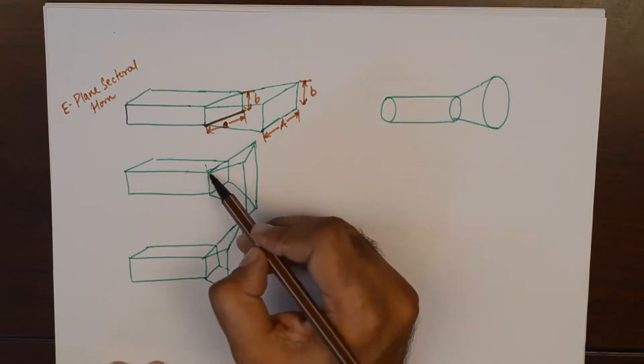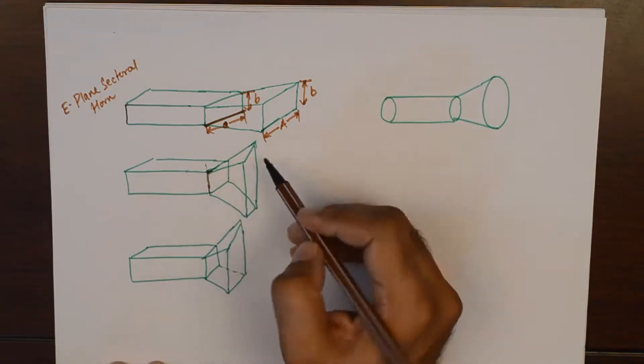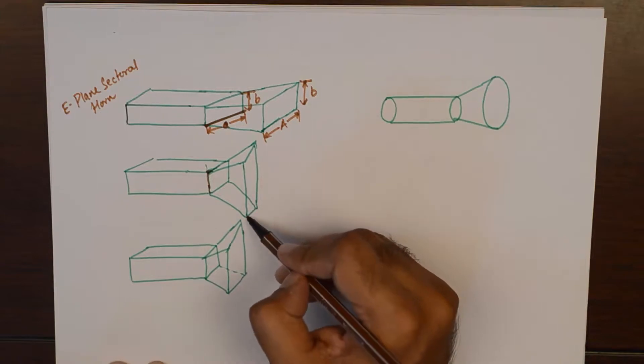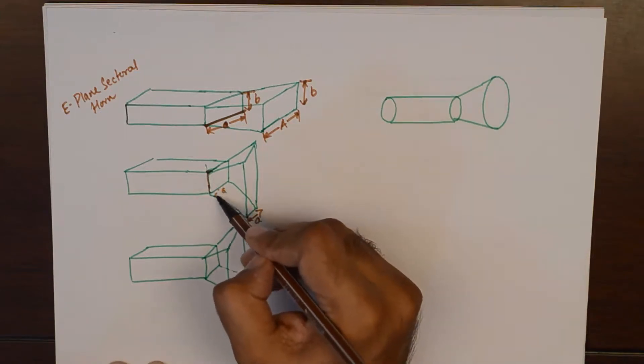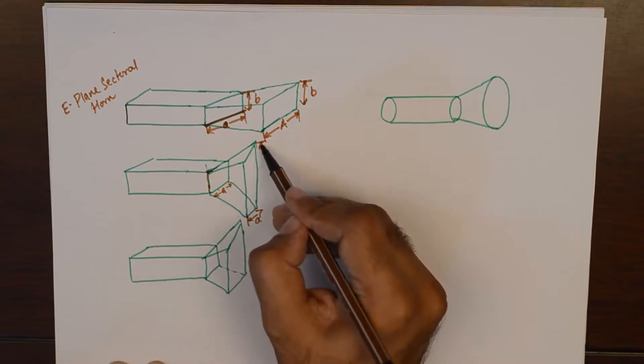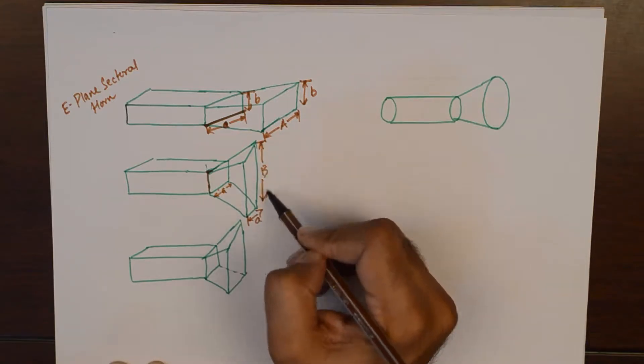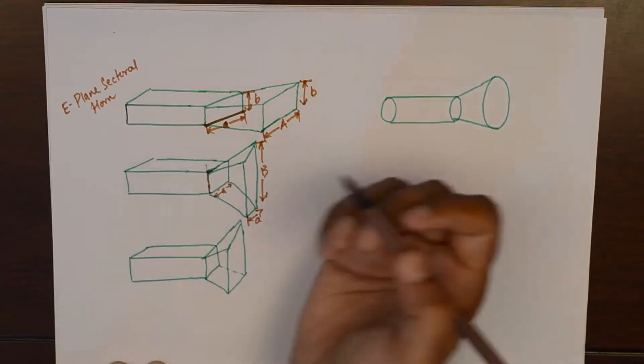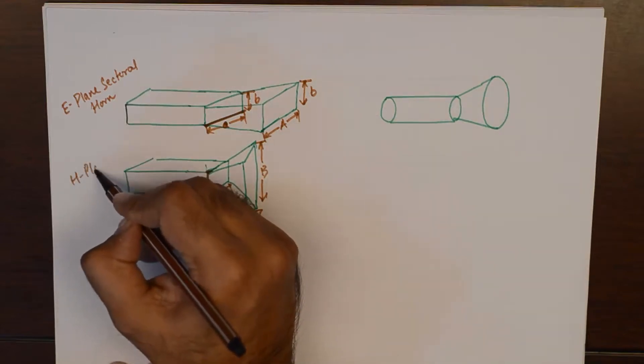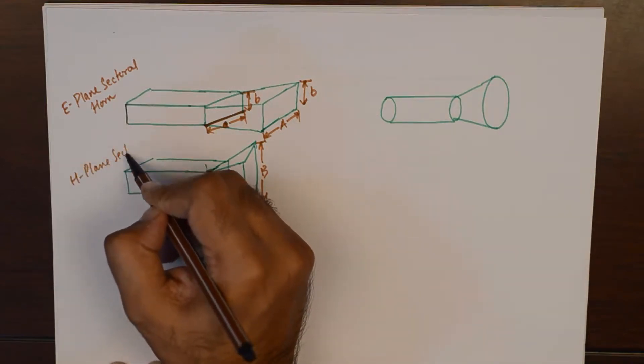And similarly, if this thing remains A as it was here and this thing increases, its height increases then we get an H plane sectoral horn.